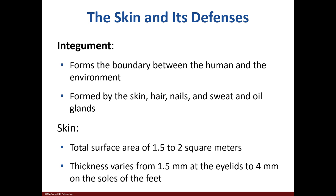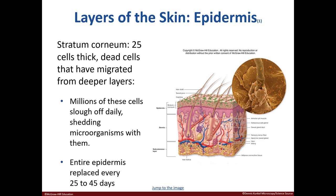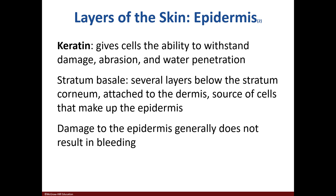The skin is considered the largest organ in the body, taking up to two square meters of surface area. Our stratum corneum is the most superficial protection, and with shedding of dead cells in this layer, so also our microbes shed. Keratin, which is part of our epidermis, also has a protective mechanism.